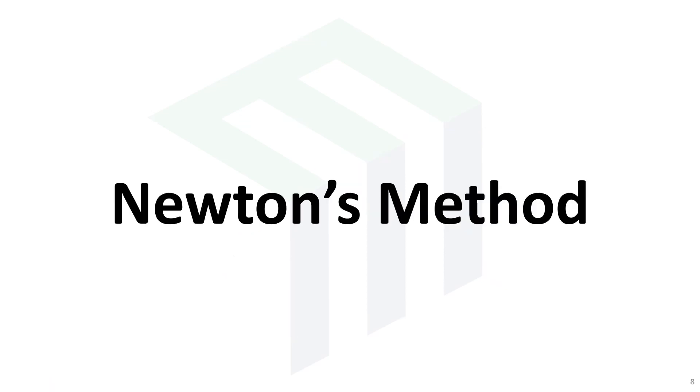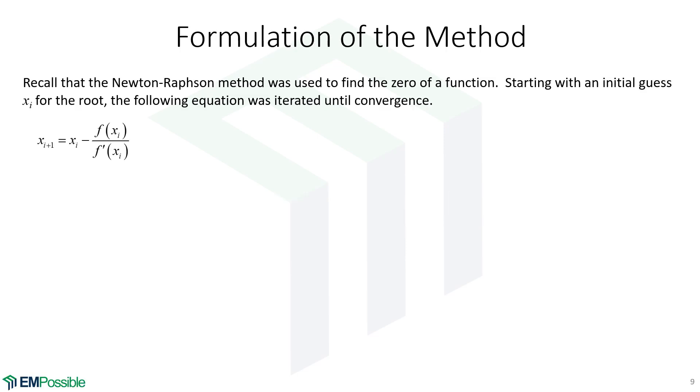Newton's method. When we were talking about root finding, we covered the Newton-Raphson method. And so we started with some initial guess, x sub i, and we iterated the function divided by its derivative. We kept subtracting that each time. And we iterated and we found a root. A root is where that function equals zero.